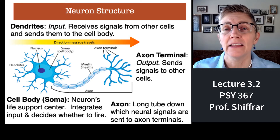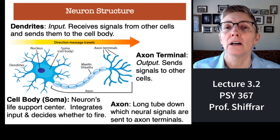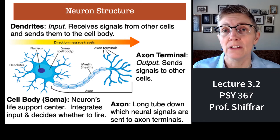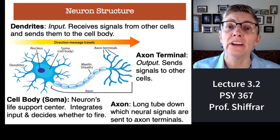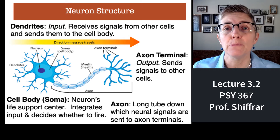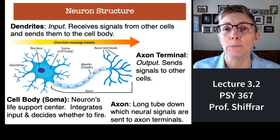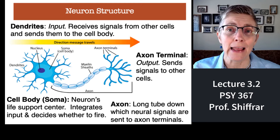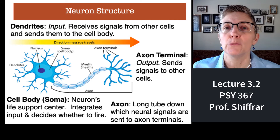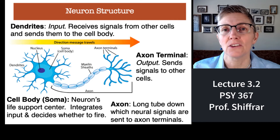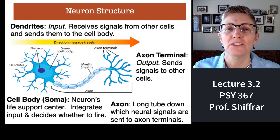There, the action potential triggers the migration of neurotransmitters to the very edge of its membrane, and then those neurotransmitters are dumped in the synapse, which is the gap between neurons, so that the neuron communicates its signals to its neighboring neurons.